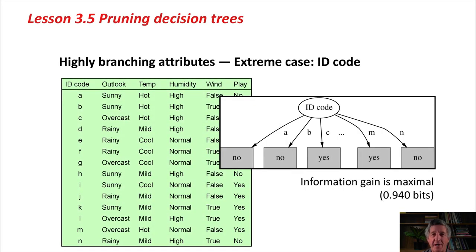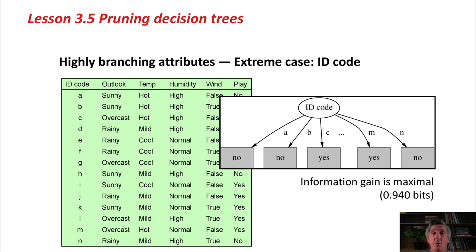Here's the weather data again — it's just a nice, simple example that we all know now. I've added a new attribute called an ID code attribute, which is different for each instance. When we consider which is the best attribute to split on at the root, we're going to gain a lot of information by choosing the ID code. Splitting on the ID code tells you everything about the instance — that's a maximal amount of information gained. Clearly we're going to split on that attribute at the root node, but that's not going to generalize at all to new weather instances.